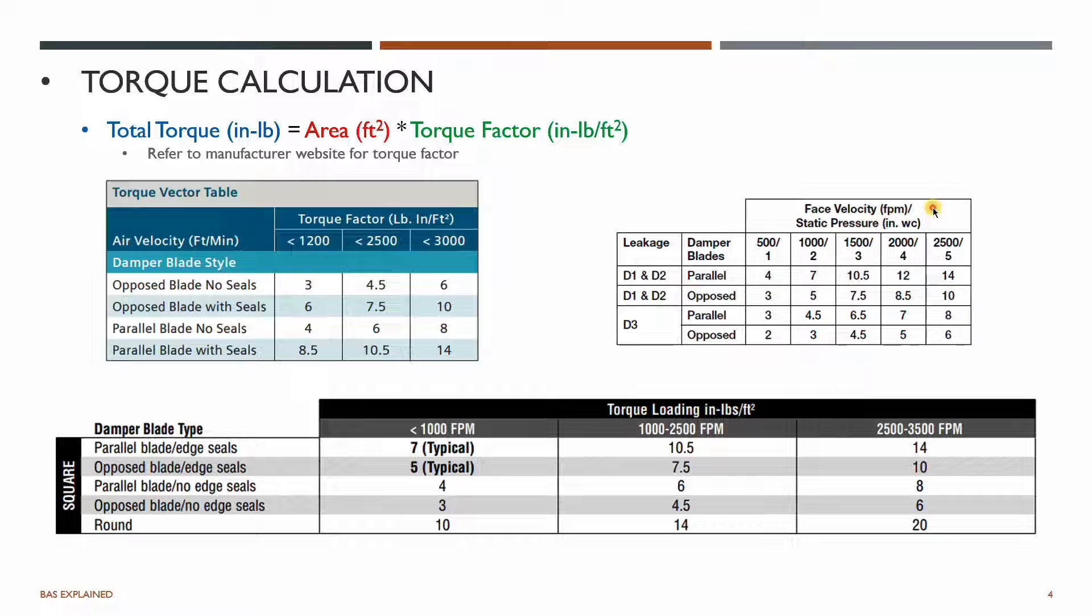This is a Honeywell table which you can see if you are selecting a D1 or D2 damper which is parallel and has FPM which is face velocity of 1000, 1500, 2000, below 2000 or below 2500. Based on that you'll select these numbers here to put into your calculation to see how much the actual torque would be coming for your actual flow with that damper.